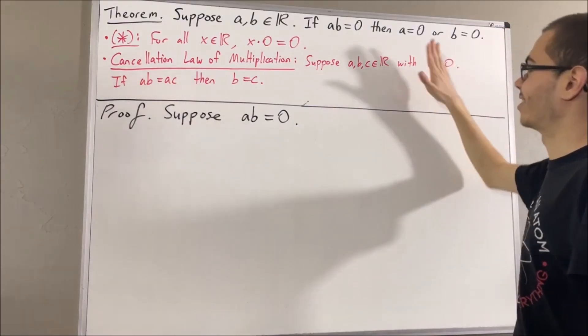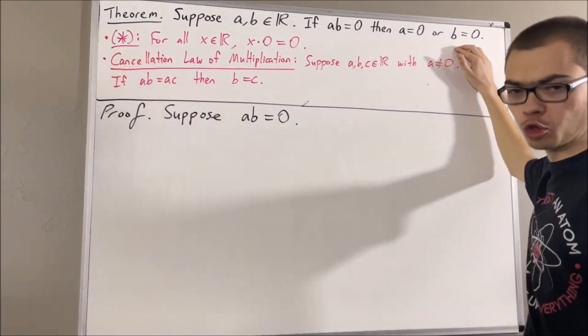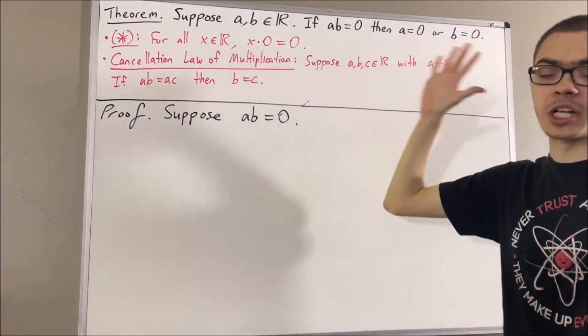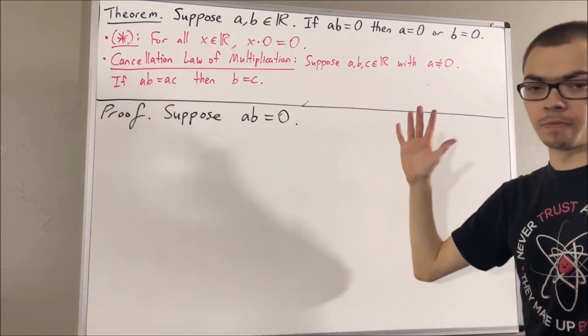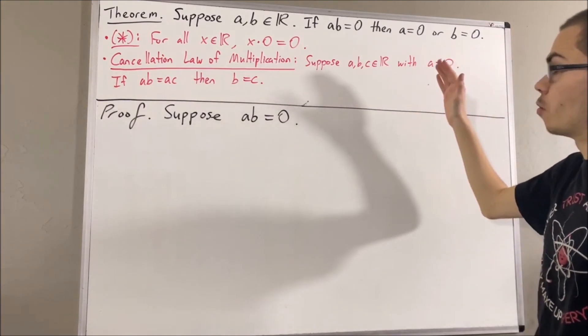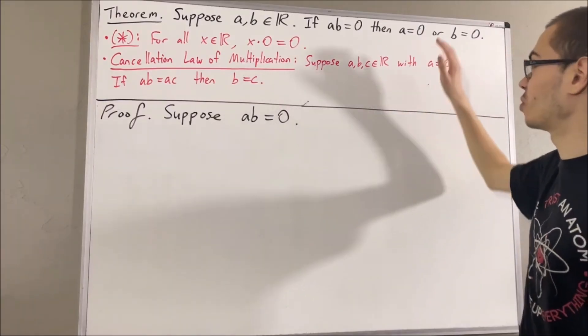In other words, we want to show that at least one of these is true. Now, we do know that either A is equal to 0 or A is not equal to 0. If A is equal to 0, then we're done. We have that at least one of these is true.